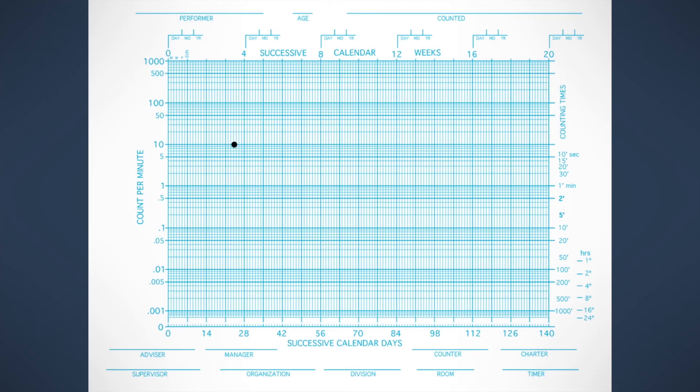Here's a data point. You learned how to read this looking at the left side of the chart. This is frequency data indicating this is a behavior occurring about 10 times per minute. Here's a record floor or a counting time bar that I taught you to use the right side of the chart to interpret, and you could say that's a 30 second counting time.